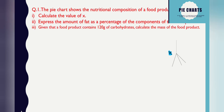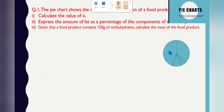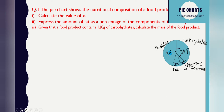Here is another chart type — the pie chart. A pie chart is constructed by dividing a circle into different sectors. Here is a pie chart showing fat, protein, vitamins and minerals, carbohydrates — it's showing the nutritional composition of a food product. This is the difference between a pictogram, a pie chart, a line chart, and a bar graph.